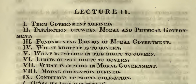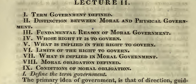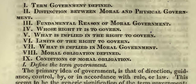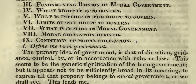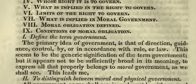Lecture Two outline: one, term government defined; two, distinction between moral and physical government; three, fundamental reason of moral government; four, whose right it is to govern; five, what is implied in the right to govern; six, limits of the right to govern; seven, what is implied in moral government; eight, moral obligation defined; nine, conditions of moral obligation.